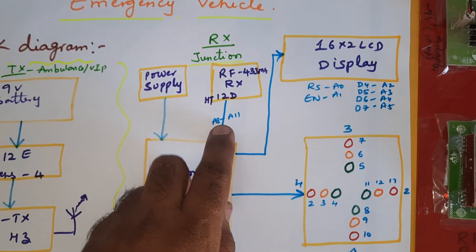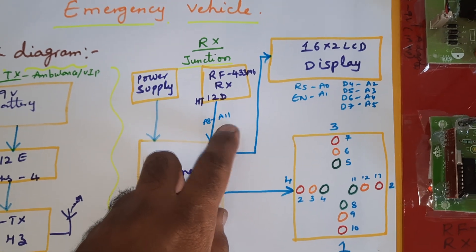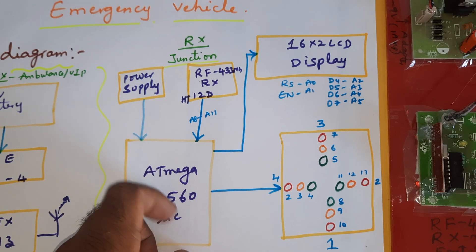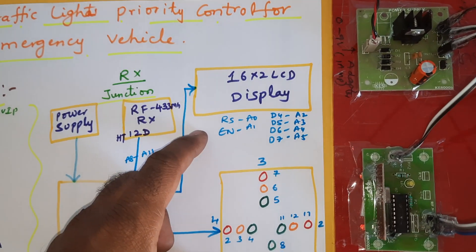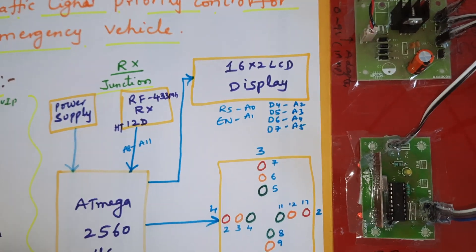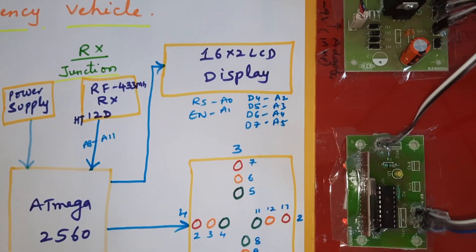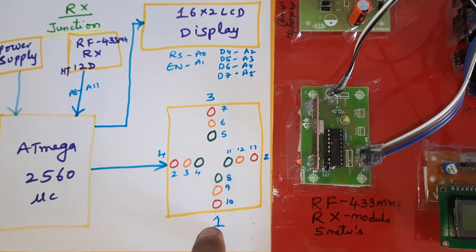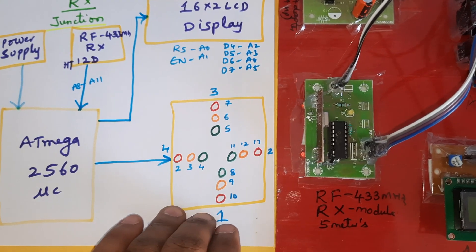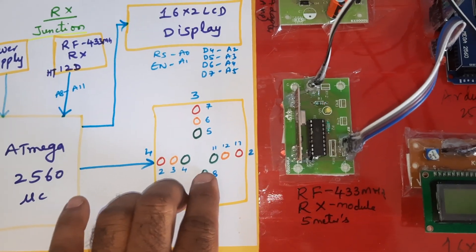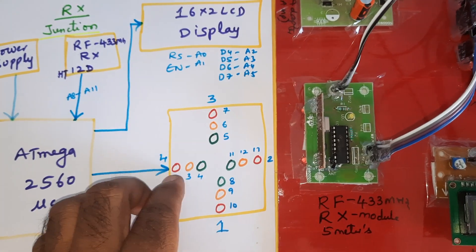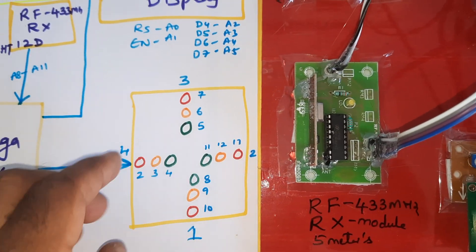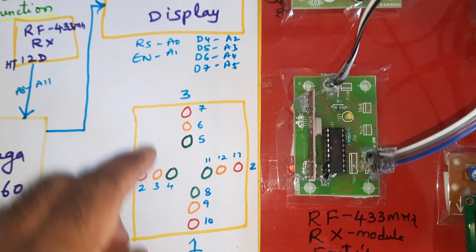The data is sent to the Arduino Mega 2560 via the RF 433 MHz receiver module and HT12D decoder IC — E for encoder, D for decoder. Those are connected with pins A8, A9, A10, A11 in 4-bit mode. Power is from a 9-volt adapter and a 5-volt supply to the Mega 2560 board. A 16x2 LCD display is connected via RS, Enable, D4–D7, and pins A0–A5. There are four lanes, each with red, orange, and green lights.